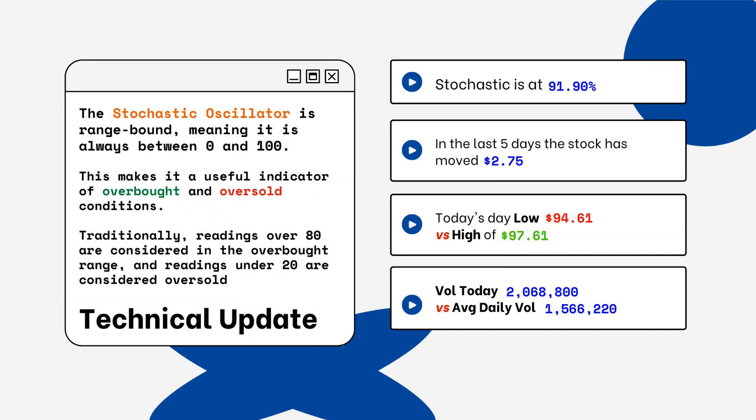You want to look for overbought and oversold conditions. Readings over 80% are considered overbought, and readings below 20% are considered oversold. You want to be aware of this when you're looking at a particular stock.